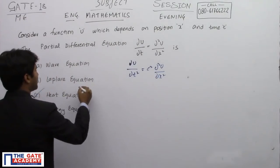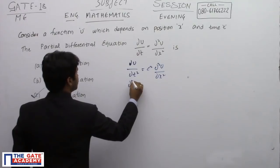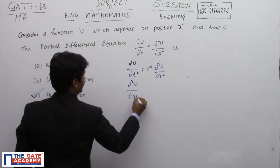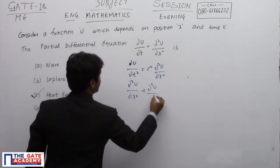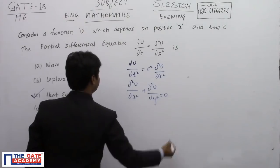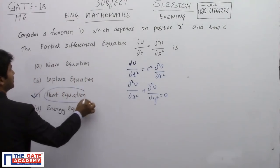As you all know, the Laplace equation is going to be something like ∂²u/∂x² + ∂²u/∂y² = 0. The heat equation is what is given here.